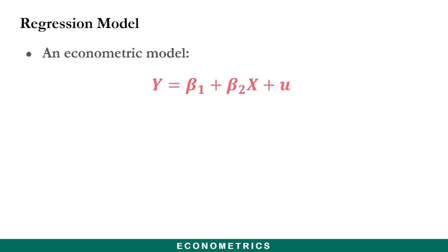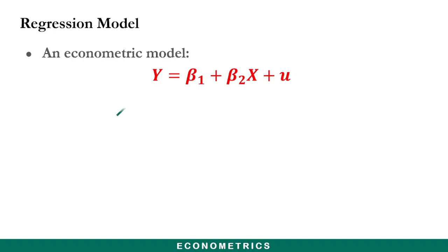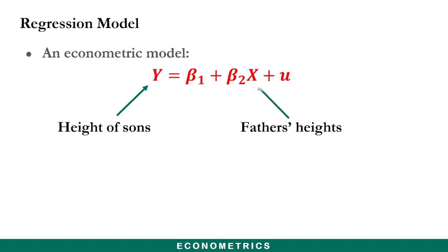An econometric model exemplifying this scenario can be of the form: y equals beta 1 plus beta 2 x plus u, in which case y is the dependent variable representing the height of sons which Galton predicted, and x is the independent variable which is the father's height whose values were known and used in the prediction of the average height of sons.